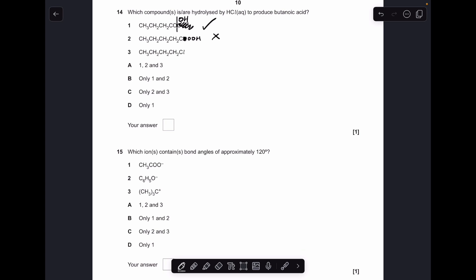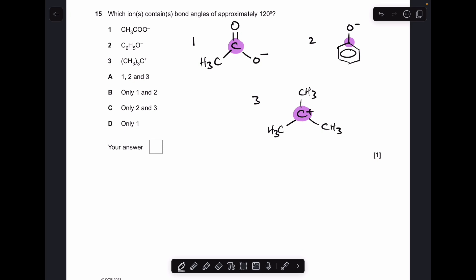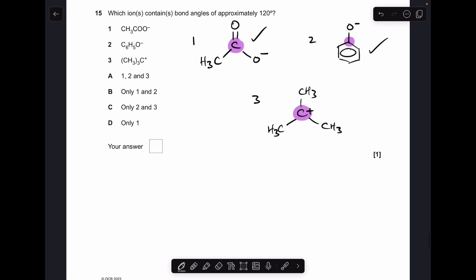And finally, number fifteen. You can see in one we've got three electron regions around the highlighted carbon. They're all bonding regions, so that will be a 120-degree bond angle. You've got the same going on in two, so that will be 120, and you've got the same going on in three as well. So all three were right, so A is the answer.